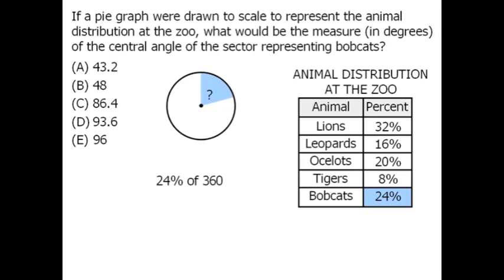Now we can evaluate this using decimals or fractions, or we can take a shortcut. Recognize that 25% of 360 is equal to 90. So 24% of 360 will be a number slightly less than 90.